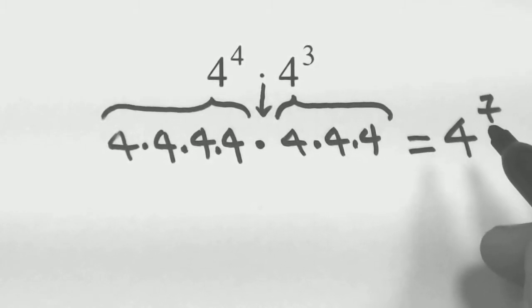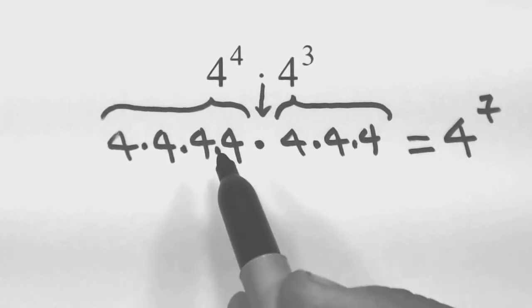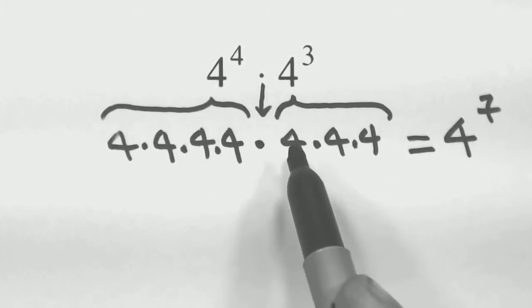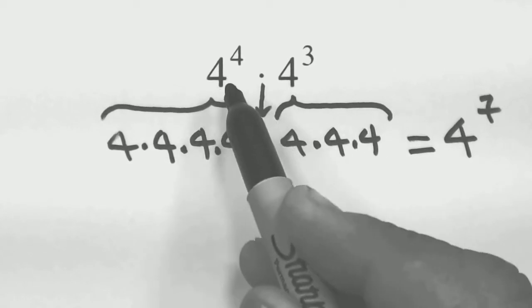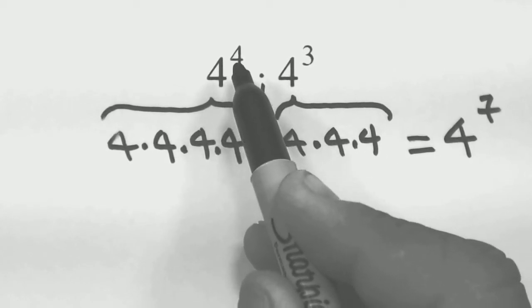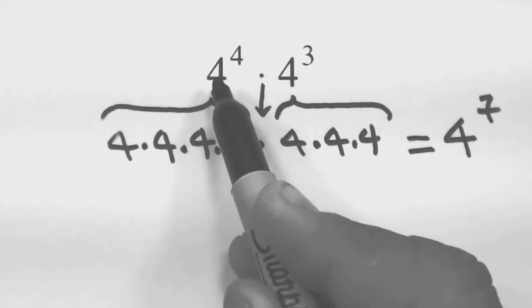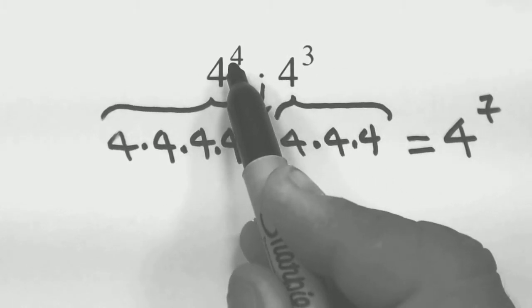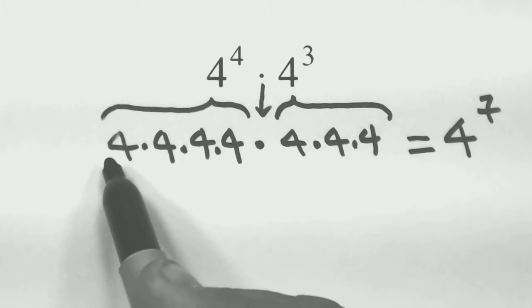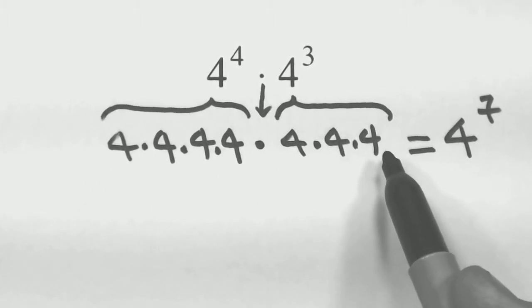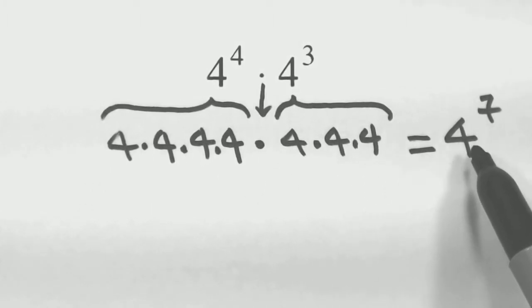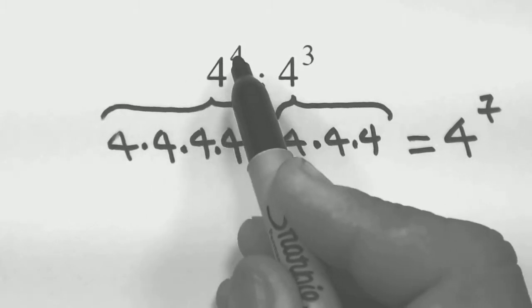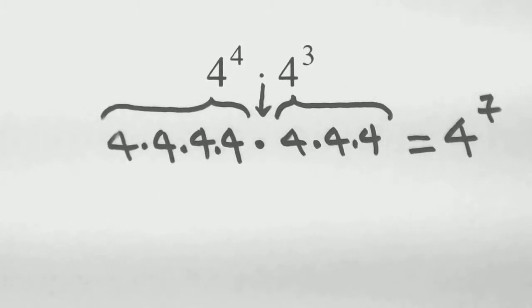There's a nice shortcut here: you don't have to spread all those guys out. I've got 4 of them here and 3 more here — that 4 combined with that 3 gives a total of 7, so simply write the answer as 4 to the 7th.